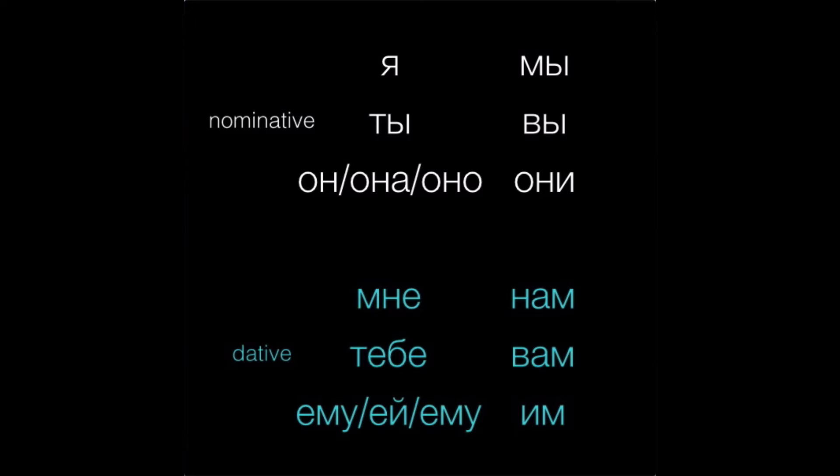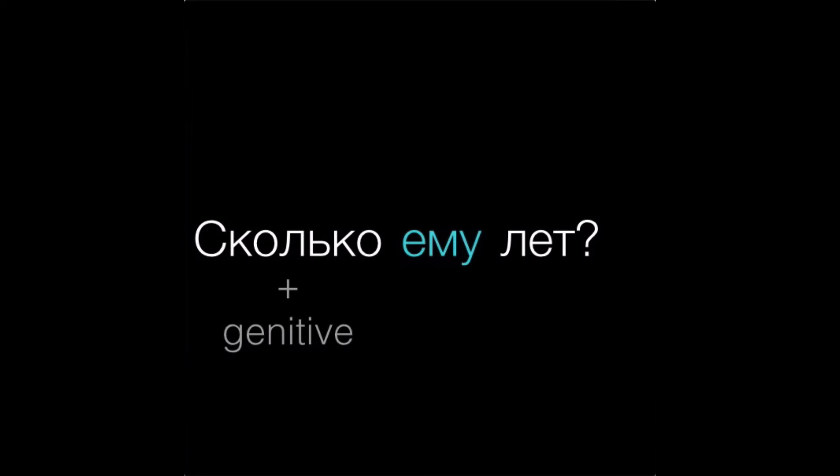So, to ask how old someone is, we can use the word сколько — how much or how many — with one of these dative pronouns and the word лет, years. Why лет, why that form? After сколько, we use the genitive plural form for countable things like years, and лет is the irregular genitive plural form of год, meaning year.